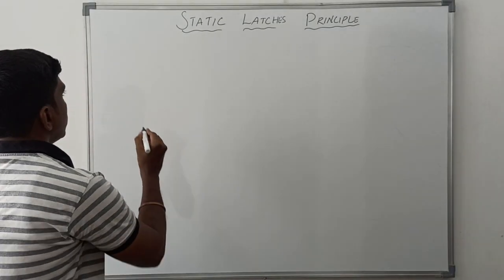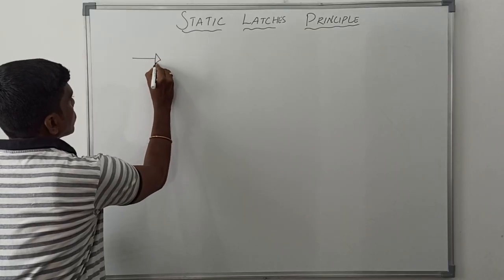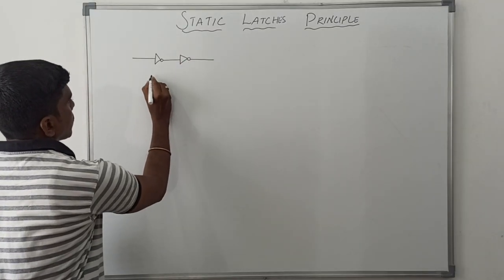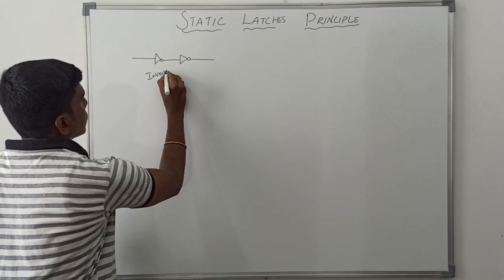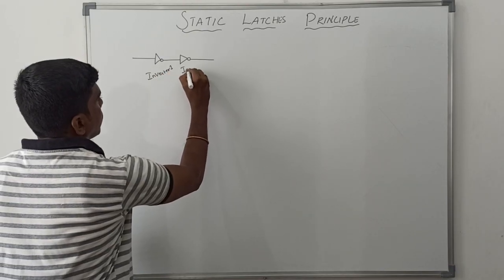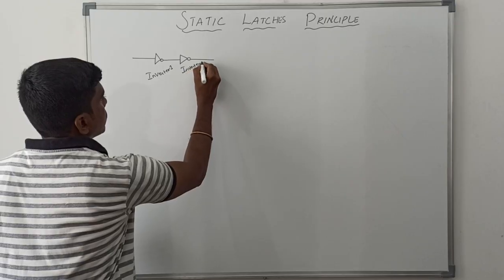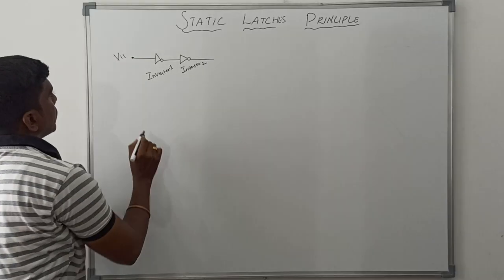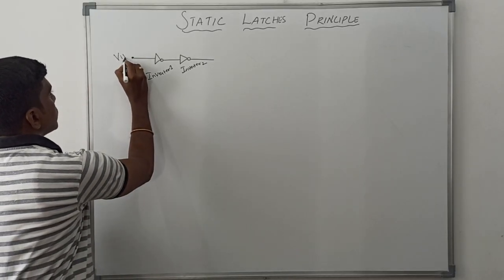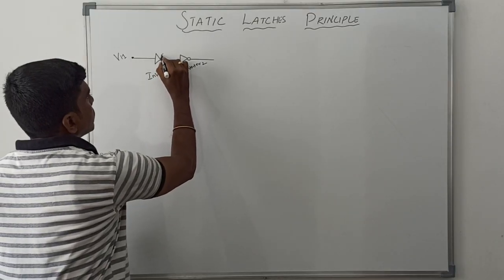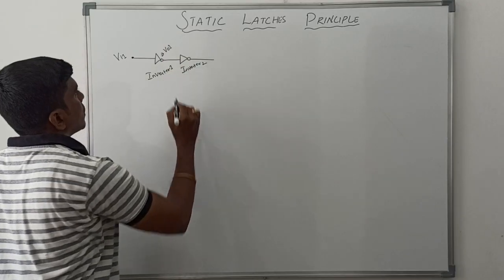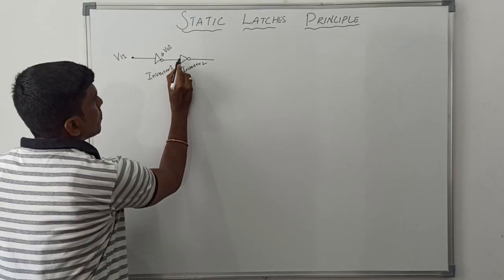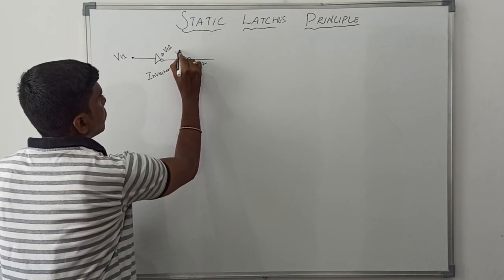Now I draw the bistable circuit. In this circuit, two inverters are connected in cascade. This is inverter 1 and this one is inverter 2. VI1 is the input of the first inverter, and VO1 is the output of the first inverter. This output is given to the input of the second inverter, so it represents VI2.